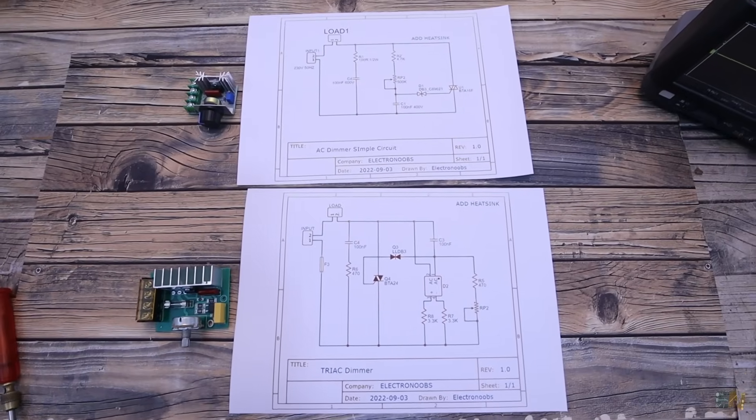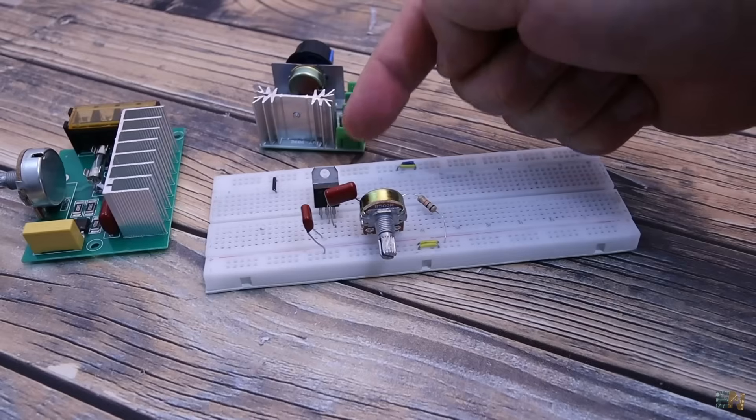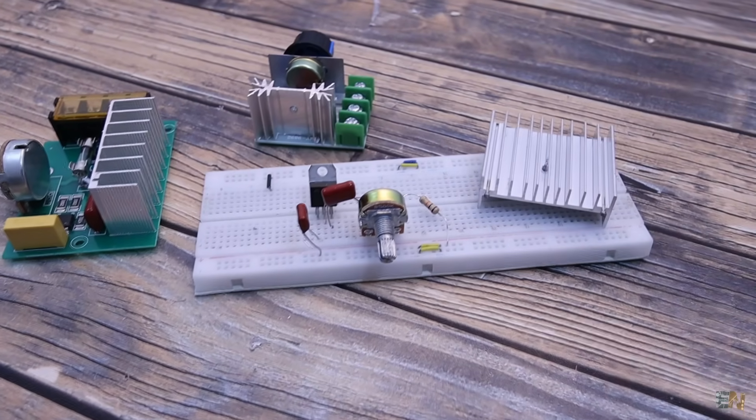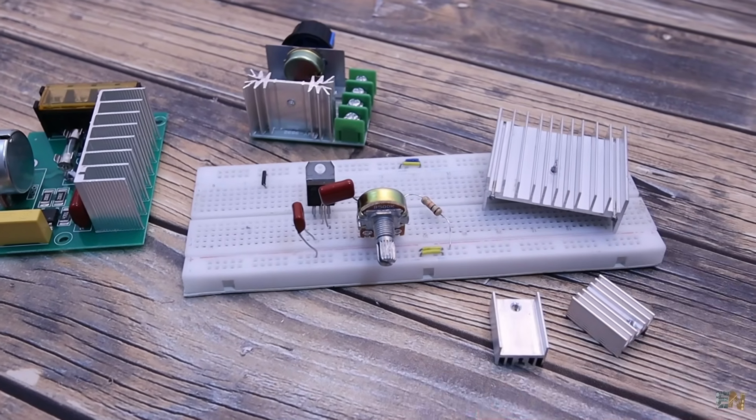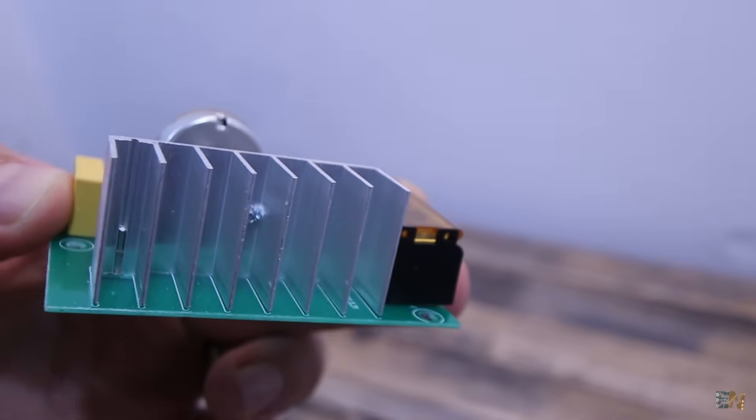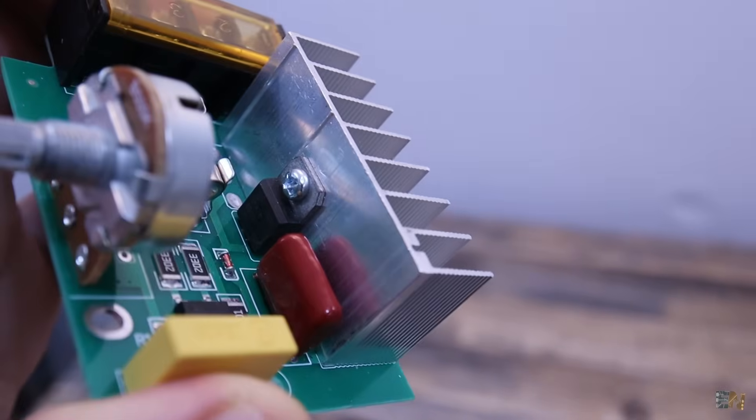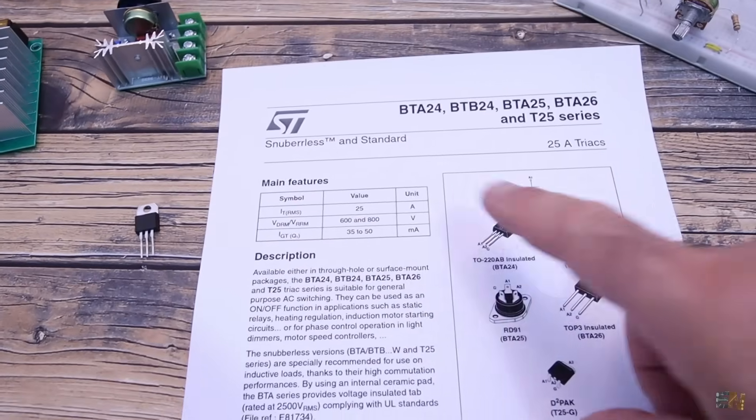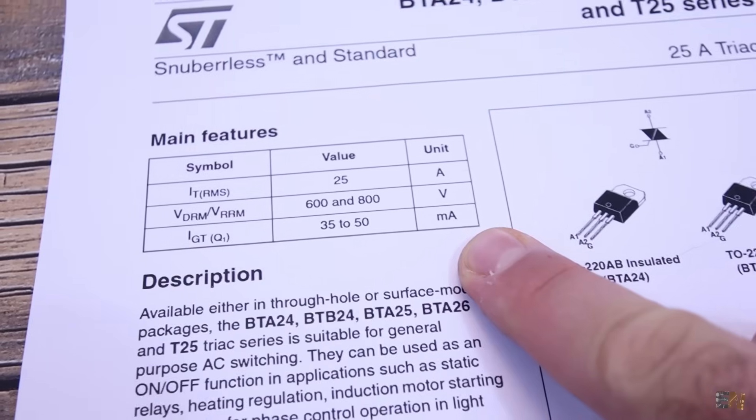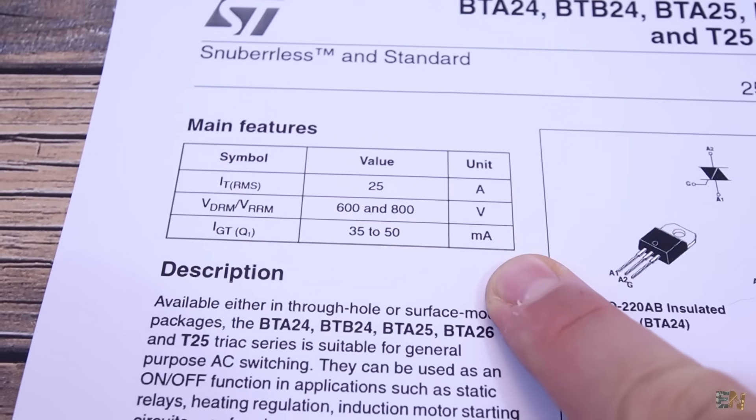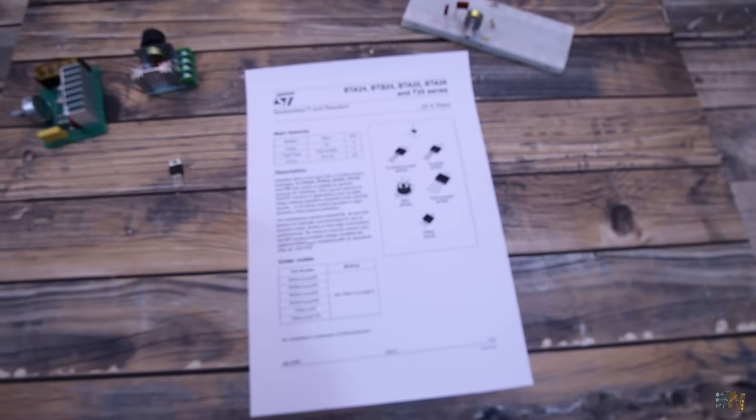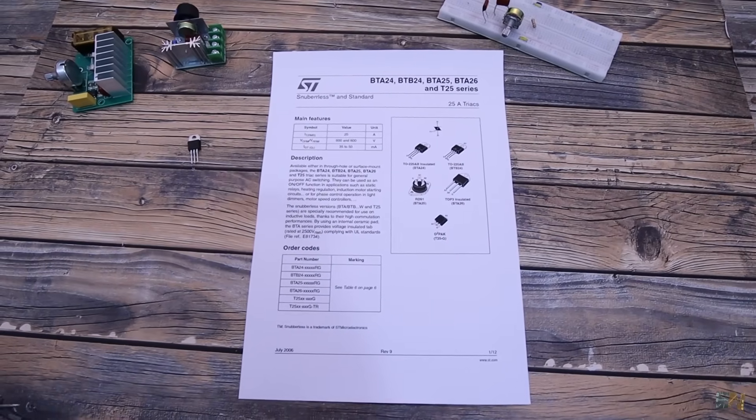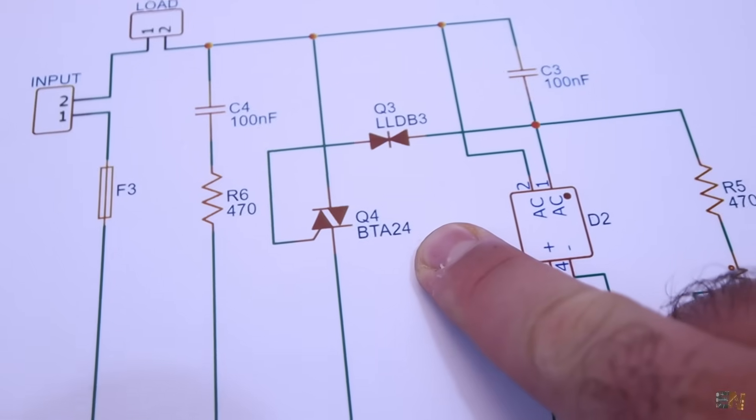Have in mind that for a lot of power, the triac will get hot due to power losses. That's why all the AC dimmers will have some sort of heatsink to dissipate that heat. The BTA24 for example could work with up to 800V and 25A and that's a lot of power. But make sure to check the datasheet of each component before you make such a circuit.